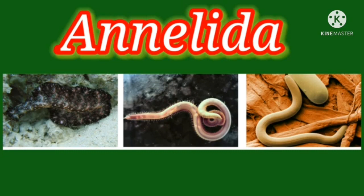The fifth phylum, Annelida — segmented worms. That is their special character. They are bilaterally symmetrical and triploblastic. They are the first true coelomate animals — that means they have a true body cavity. The body is divided into segments called metameres, and metameres are joined by ring-like structures called annuli.